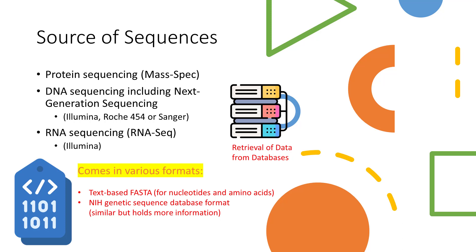Sequences come from various sources, which include the analyses methods used to perform the sequencing. For protein sequencing, the traditional Edman degradation or the more modern mass spectrometry generates peptide fragments that can be matched against relevant databases. For DNA sequencing, including higher-throughput next generation sequencing (NGS), large amounts of data are generated in terms of reads and clusters of reads. Common DNA sequencing platforms include Illumina, Roche, and the more traditional Sanger dideoxy method. RNA-seq is a sequencing method to examine the exonic, intronic, and junctional reads of RNA. Notably, these sources of sequences come in various formats.